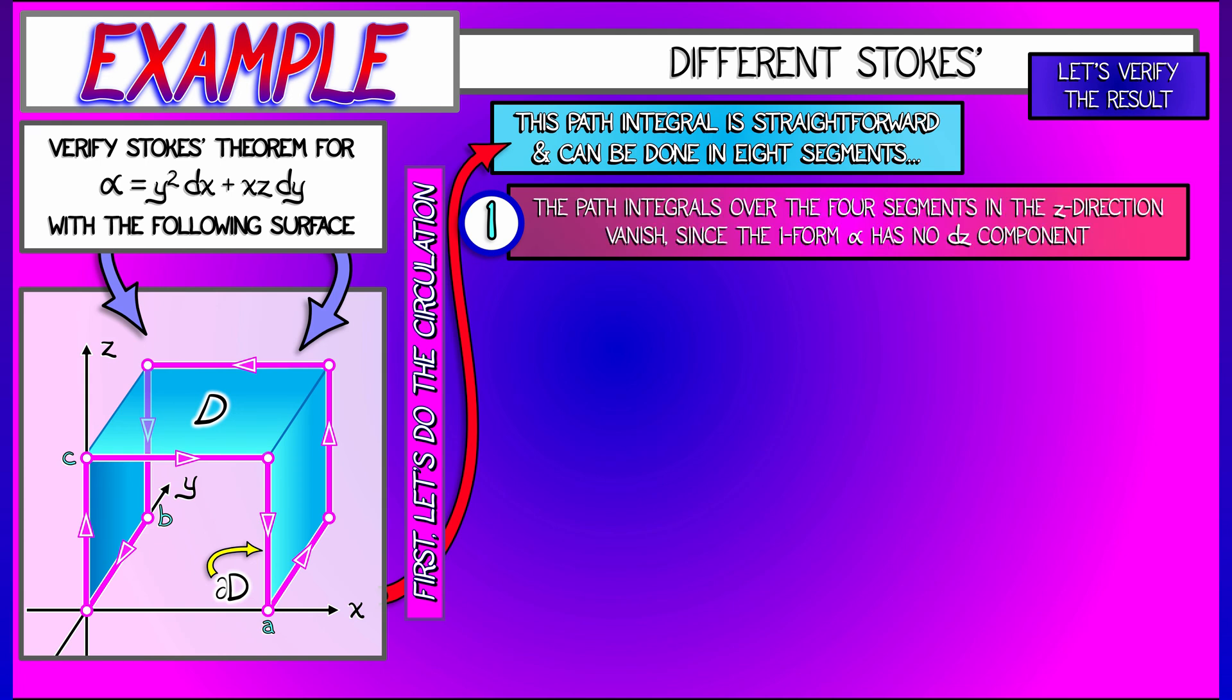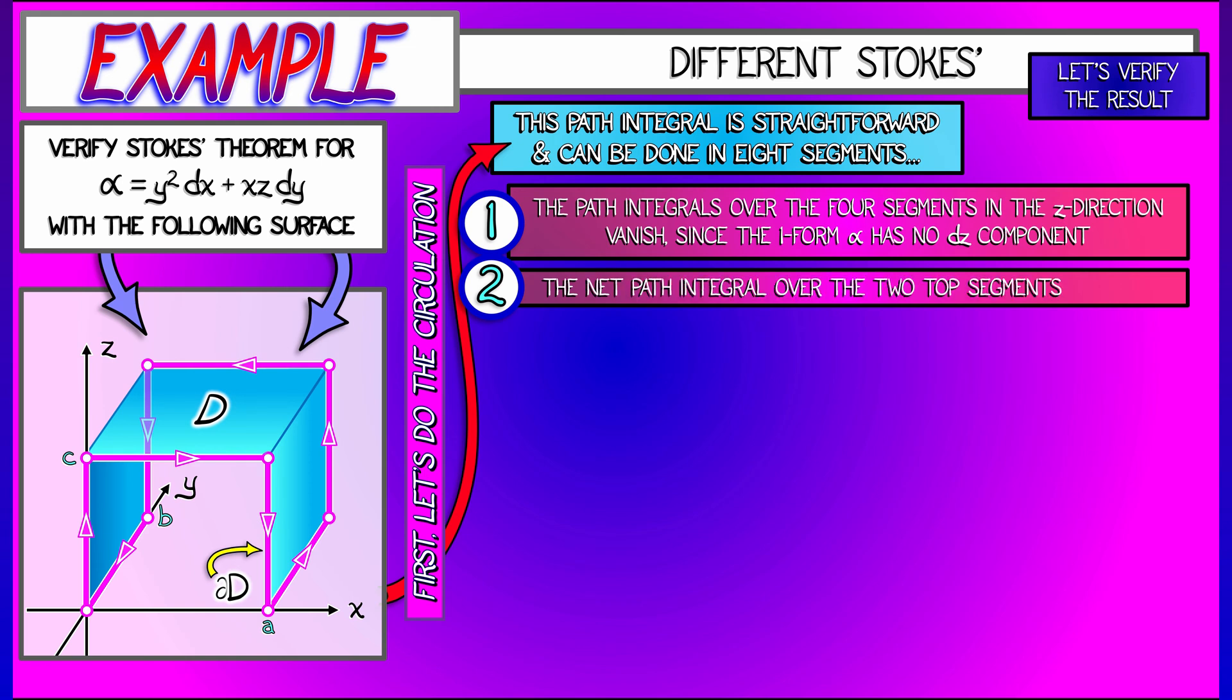The four segments that go up or down parallel to the z direction, we throw those away immediately, since this one-form alpha has no dz term to it. That means that those components that are just moving in the z direction, forget about it. Those don't count at all. What's left over? We have four remaining path integrals.